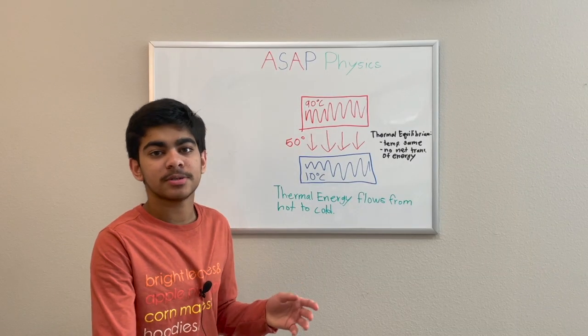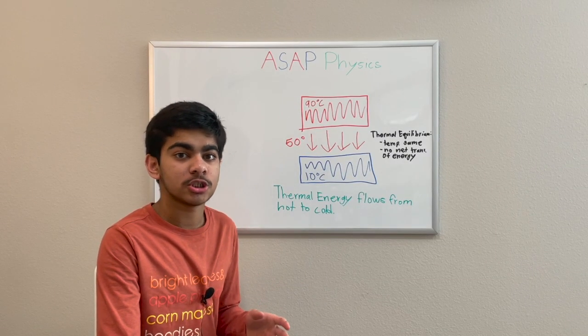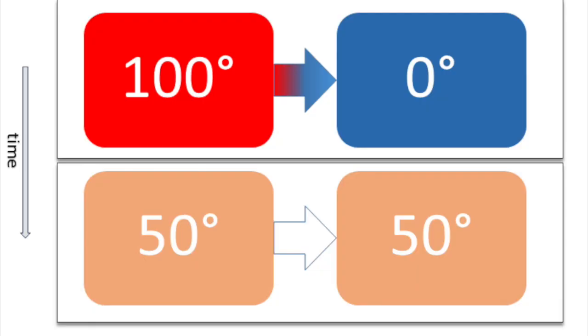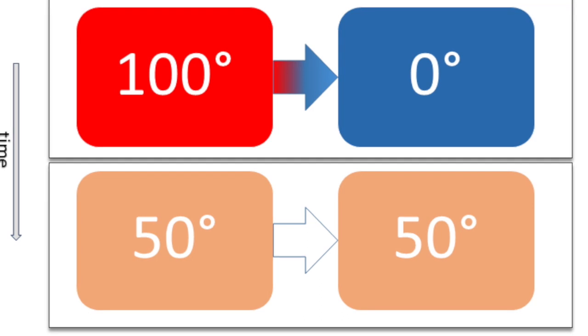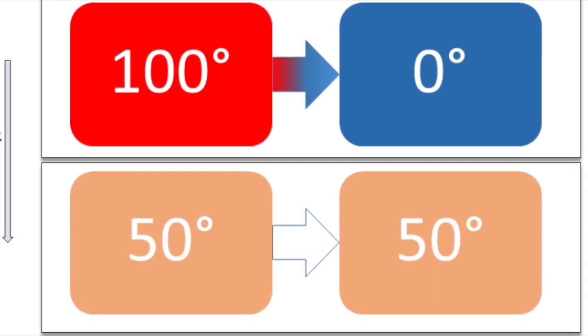An important concept in thermodynamics is that thermal energy always flows from hot objects to cold objects. This happens until both objects reach the same temperature. At this point, we say that the objects are in thermal equilibrium.